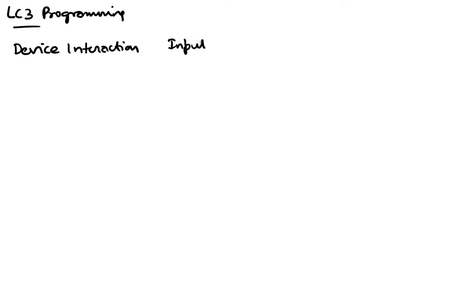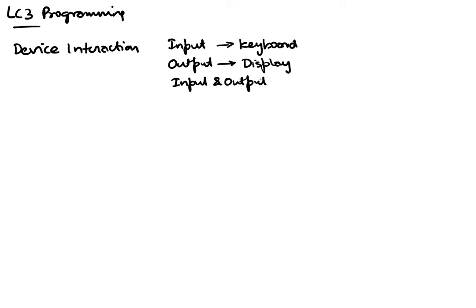Devices can be thought of as being input devices or output devices — strictly input or strictly output. An example of an input device is a keyboard. An output device could be a display, or a device that does both input and output, like a disk or your hard drive.